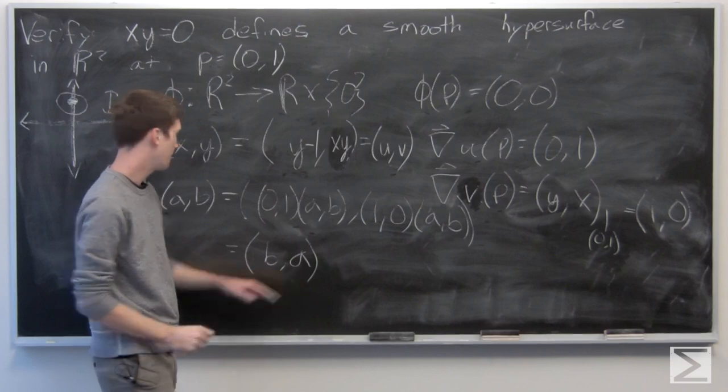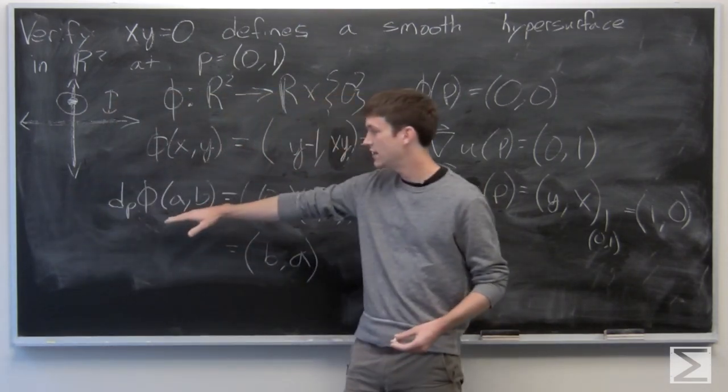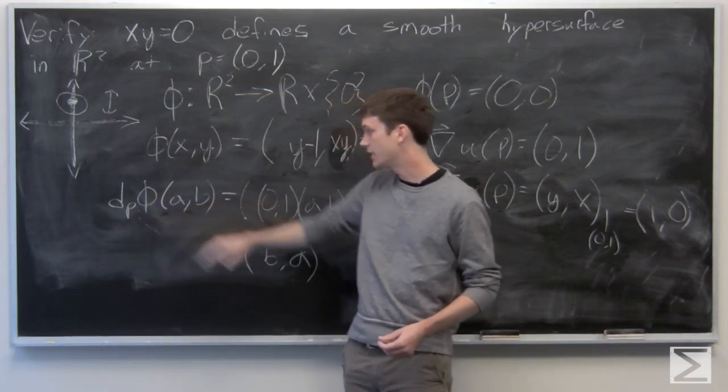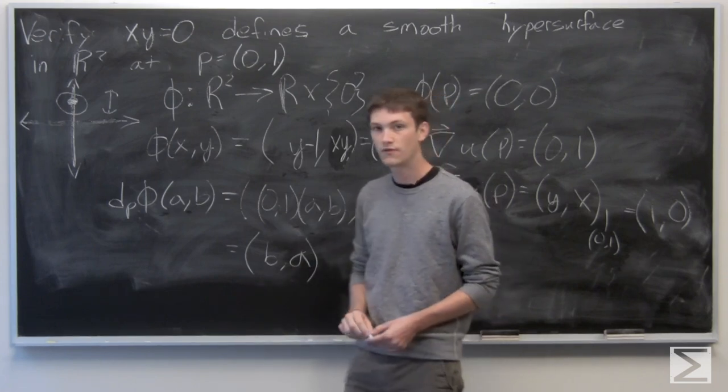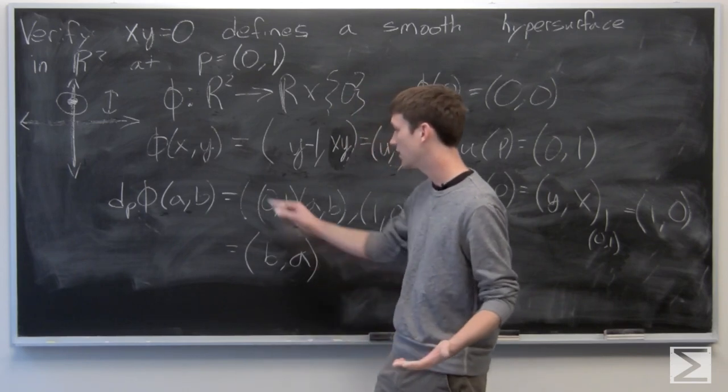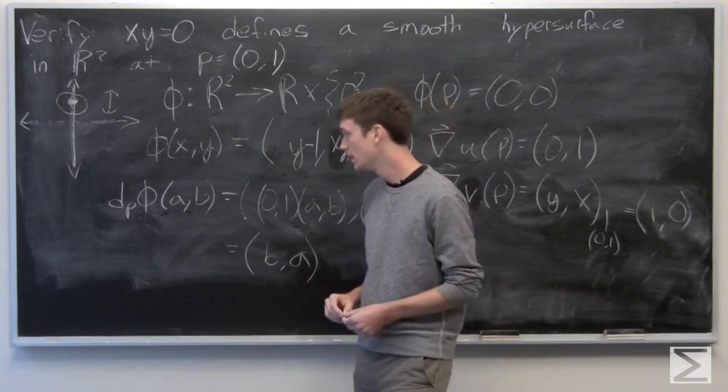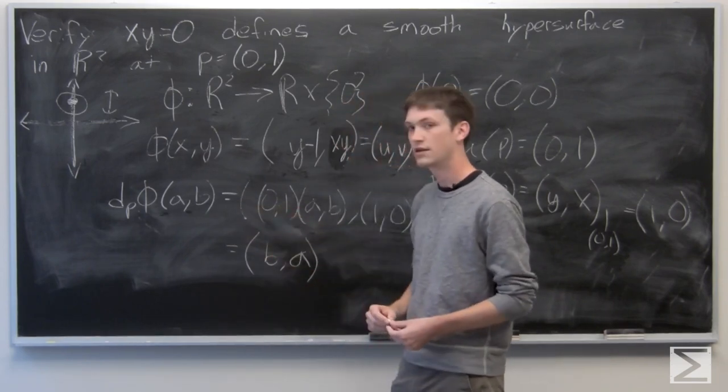And we see that the total derivative of phi at p with respect to a, b is b, a. So clearly that's a smooth, infinitely differentiable function. So phi is invertible.